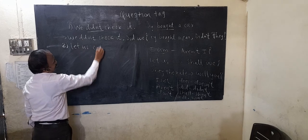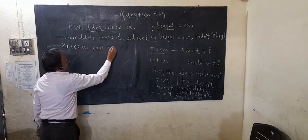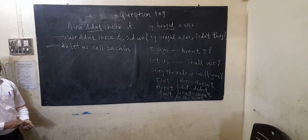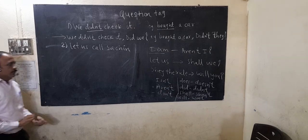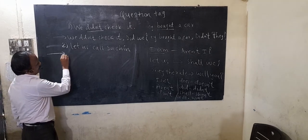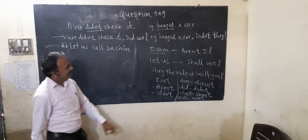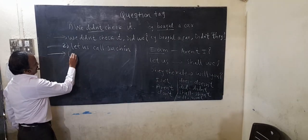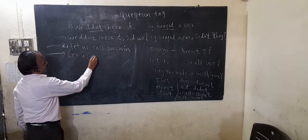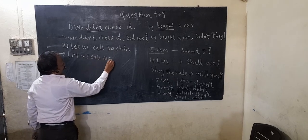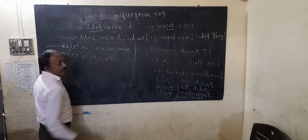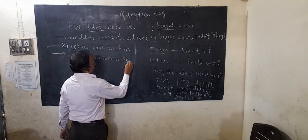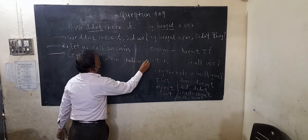For example: 'Let us call Sachi.' Since the statement starts with 'let us', the question tag will be 'shall we?' Always remember that when 'let us' is the start of the statement, 'shall we' comes as the question tag.